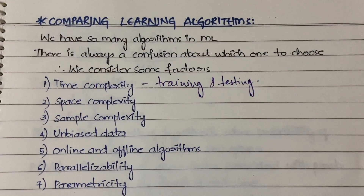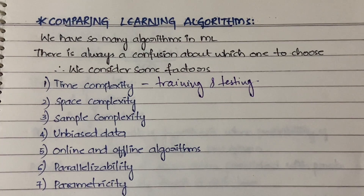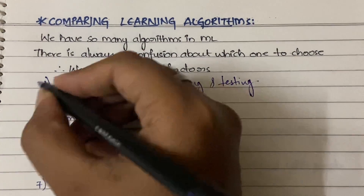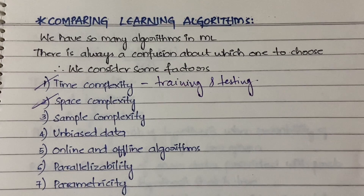Space complexity refers to how much space the algorithm is taking. Since we have so much data and we train so many examples to the machine, we need to choose an algorithm which will take up only less space — it should be efficient in terms of space as well. So that is space complexity. The third factor is sample complexity.